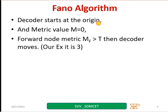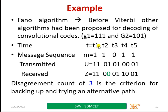Decoder starts from the origin, and metric value M will be 0 in the beginning. And forward node metric, MF, is greater than threshold T, then decoder will move forward. In our case, we are going to take an example as 3. It will be very easy to understand the algorithm.